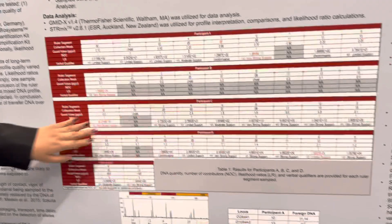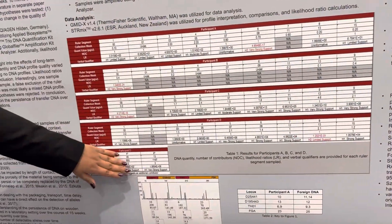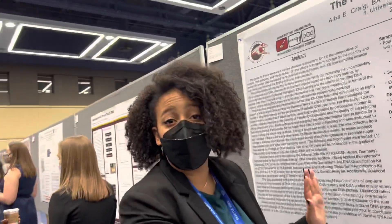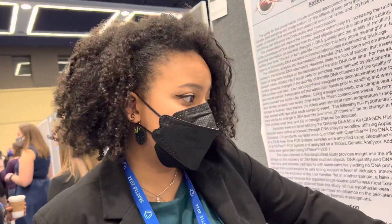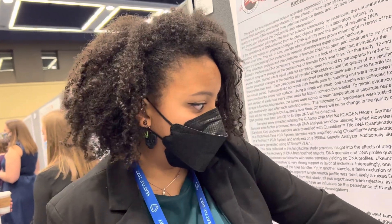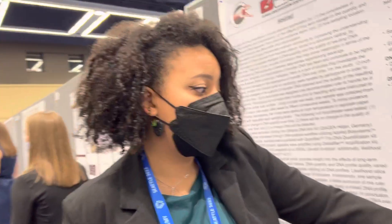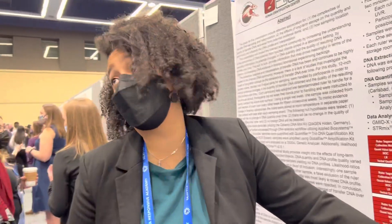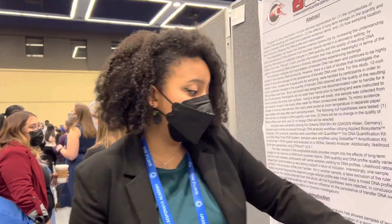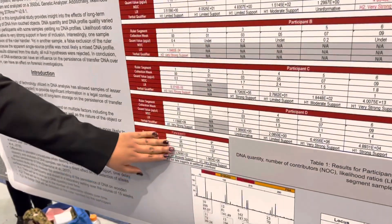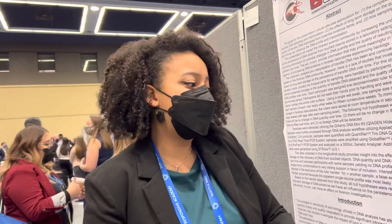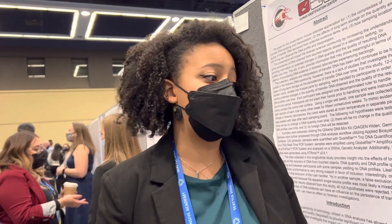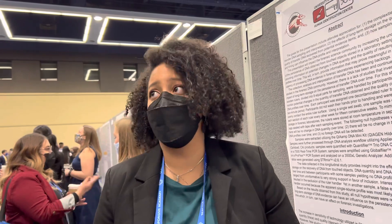Here, for participant D, we separated each ruler that the participant held into nine segments — that's what this table is showing. For participant D specifically, the fourth and eighth segments, when run as single sources, were excluded from the sample. But when those same segments were run as two or more sources, they were included because of the foreign DNA. Because of the way touch DNA works, that is something very possible and actually happens constantly.